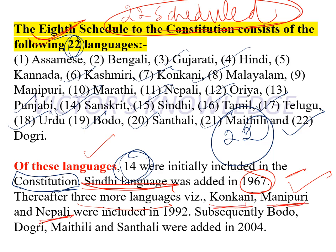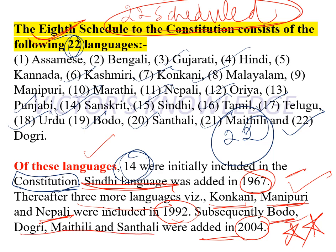An important question to remember: the 4 languages most recently added to the 8th Schedule were added in 2004 — these are Bodo, Dogri, Maithili, and Santhali. This is a frequently asked question. You may be asked how many languages were added in 2004, or which languages were added. You must remember these four along with the year 2004. Earlier additions were made in 1967 and 1992 as well — remember the full timeline.